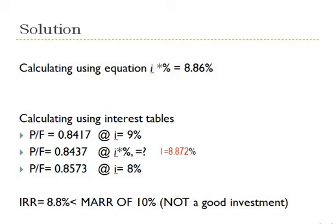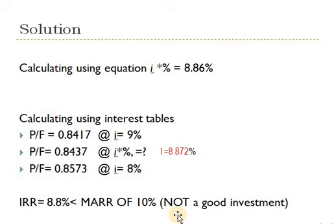Both methods gave an interest rate of approximately 8.8%. The MARR was 10%, so this company will not do this investment unless it gets at least 10%. Since the IRR of 8.8% is less than the MARR of 10%, this is not a good investment.